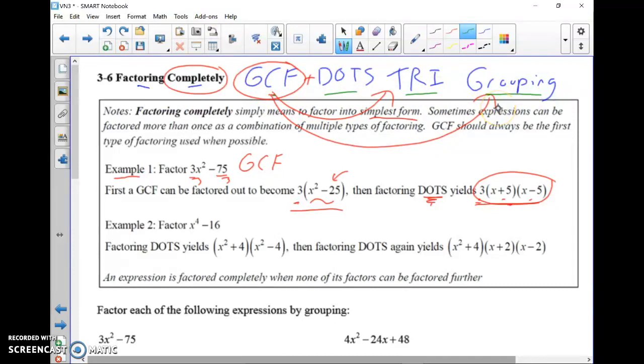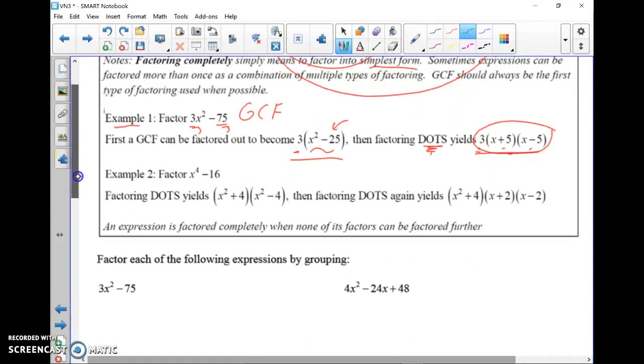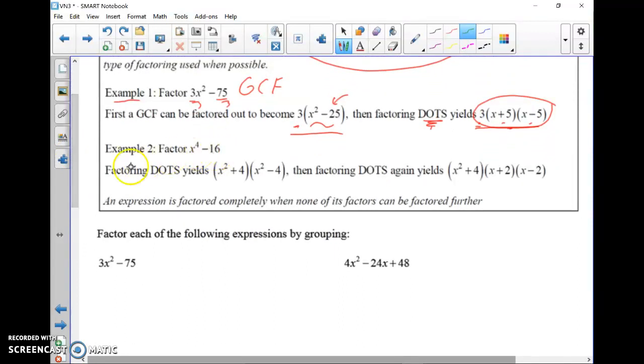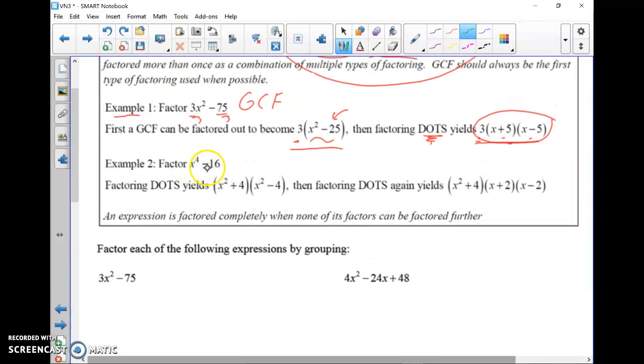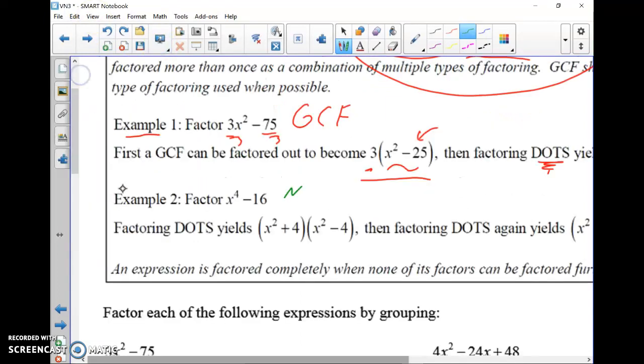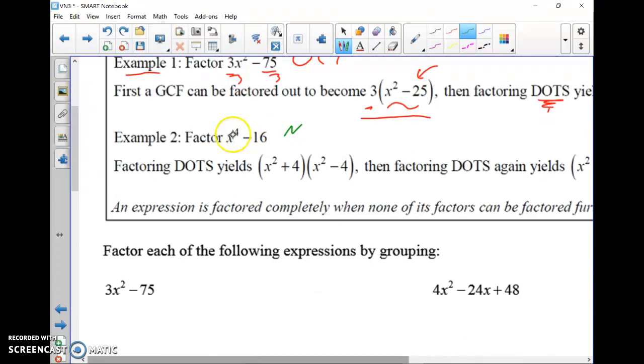The other thing you see sometimes is you see a multiple round DOTS. Look at example 2: x⁴ - 16. There is nothing in common, so there is no GCF. It's not a trinomial. It is a DOTS, a difference of two squares. Remember, DOTS can have exponents larger than 2. This x⁴, let me zoom in a little bit.